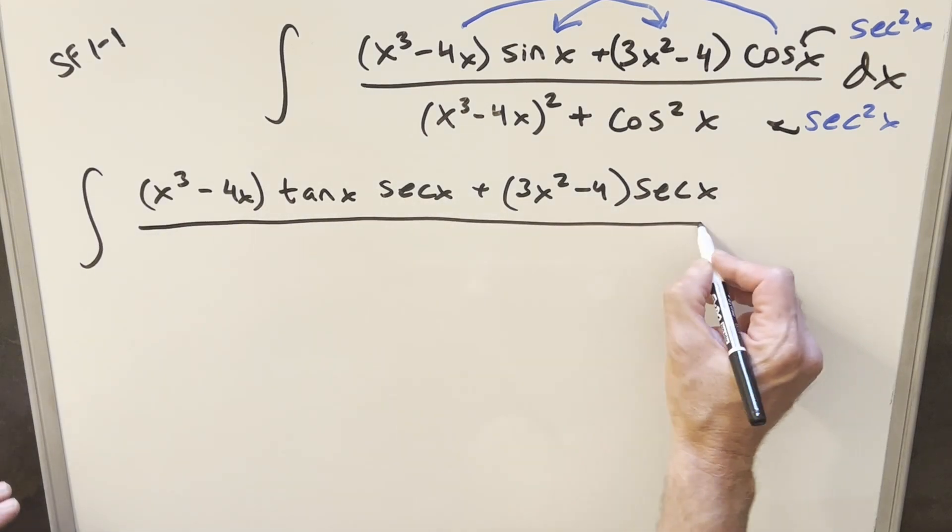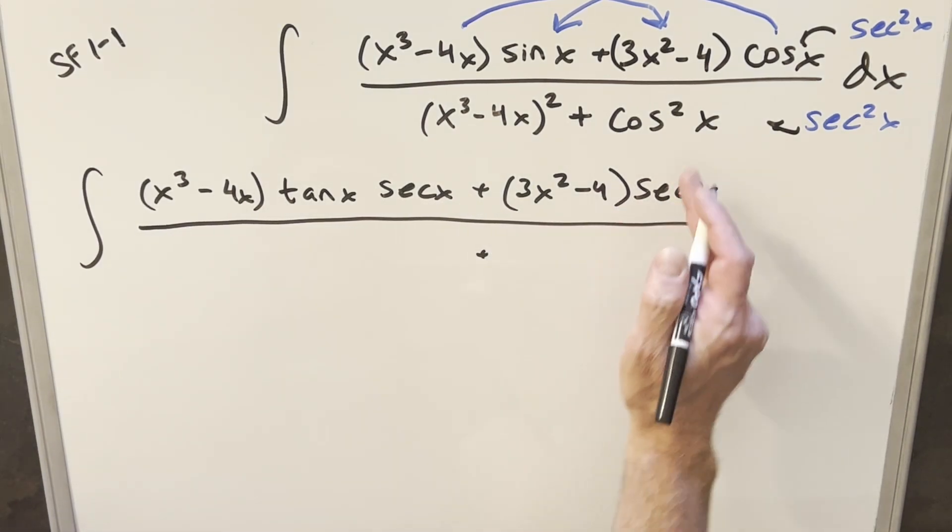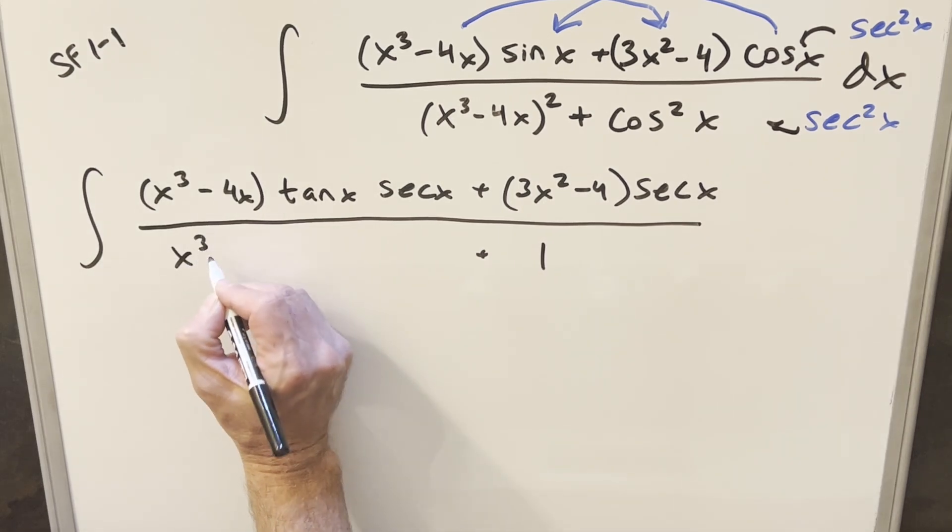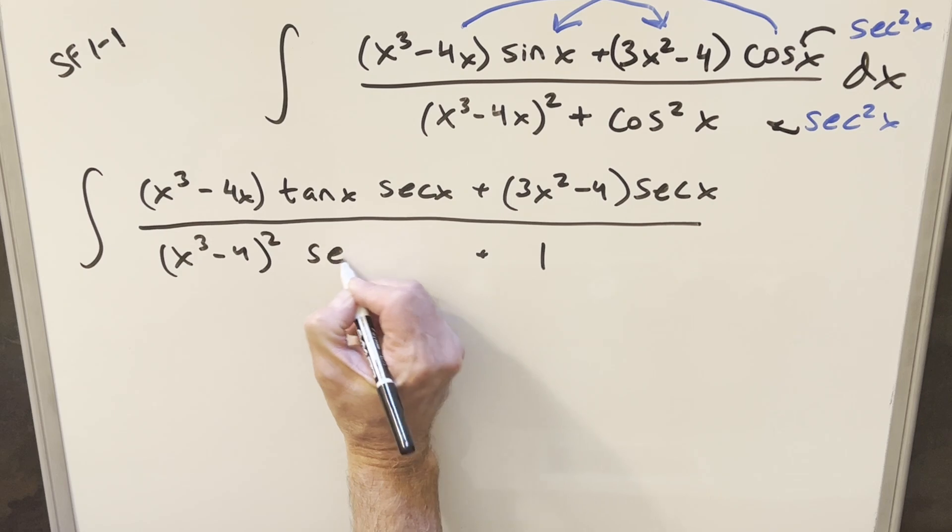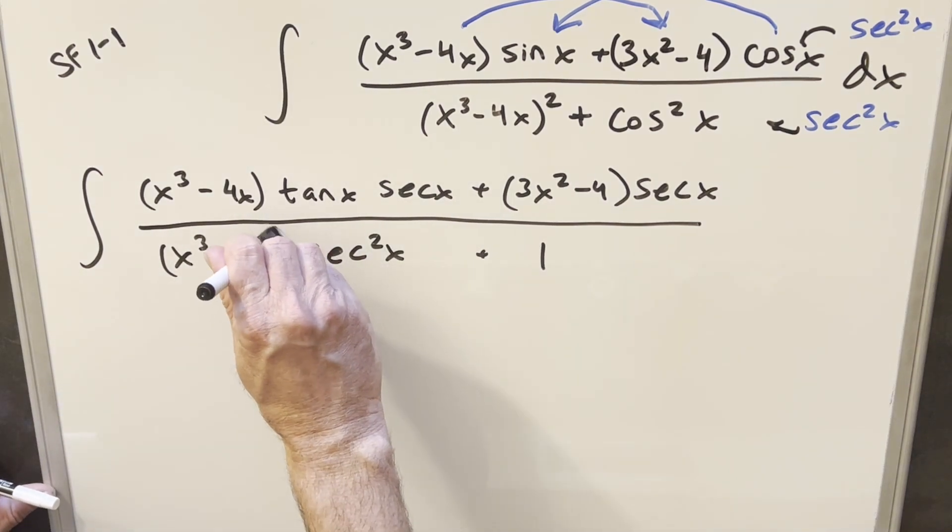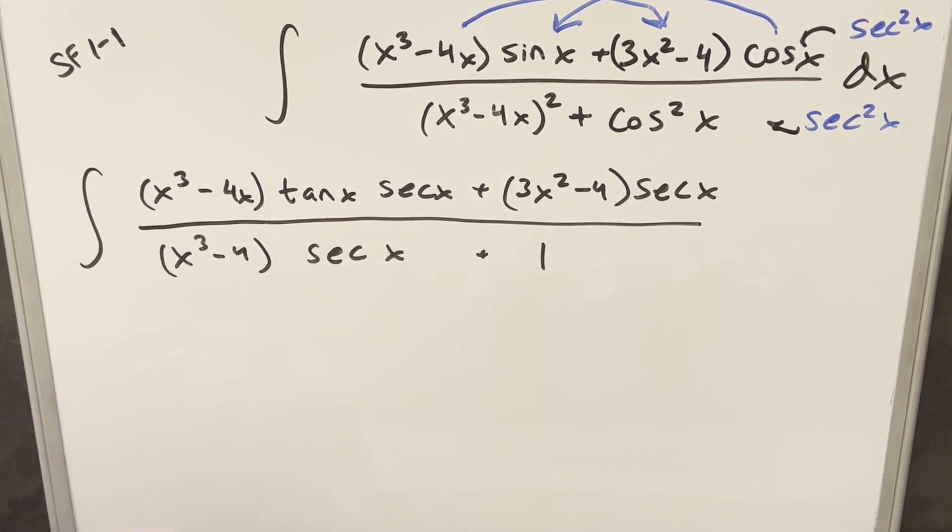And then when we multiply into the denominator on the first one here, on the cosine, cosine squared times secant squared, that's just going to be 1. And then for this other part, we'll just multiply in secant squared here. But then because we have both these terms squared, I can write it all together like this. This is all squared.